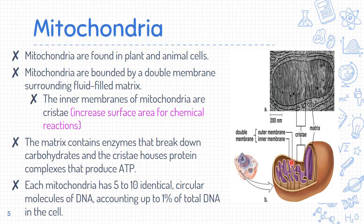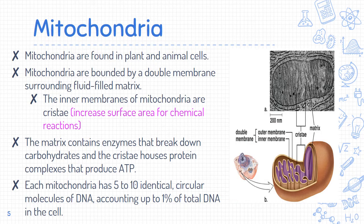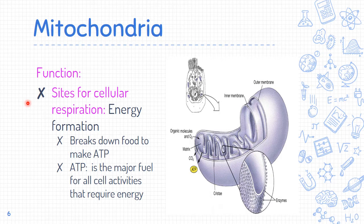The cristae houses protein complexes embedded in the membrane that promote the production of abundant ATP. The mitochondria also has five to ten identical circular molecules of DNA, what we call plasmids, accounting for up to one percent of the total DNA in our cells. The basic function of the mitochondria is as the site for cellular respiration, where energy is formed.